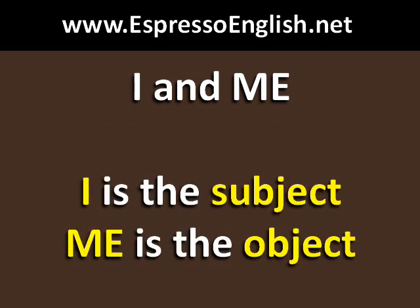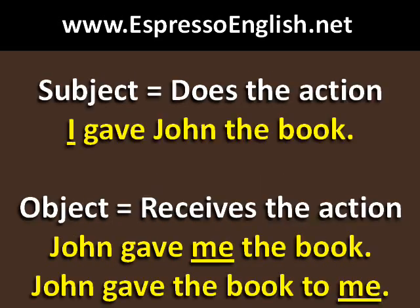I is the subject of the sentence, and me is the object. The subject of the sentence is the person who does the action. For example, I gave John the book. The object of the sentence is the person who receives the action. For example, John gave me the book, or John gave the book to me.